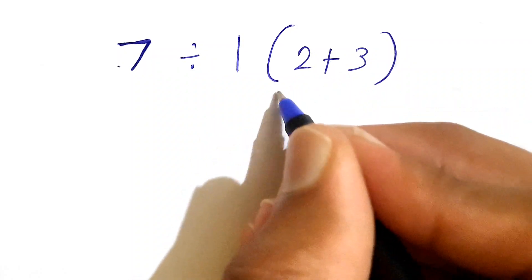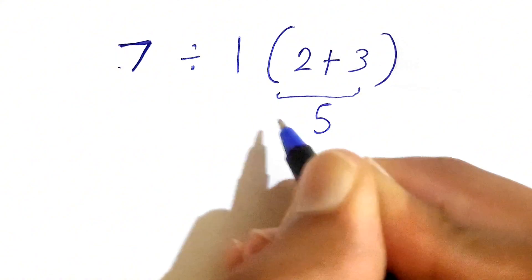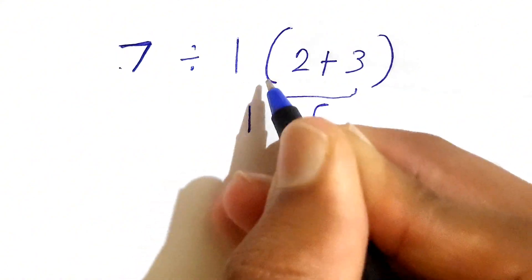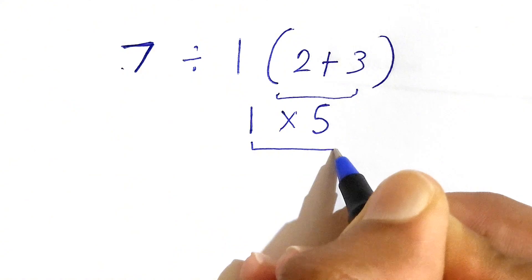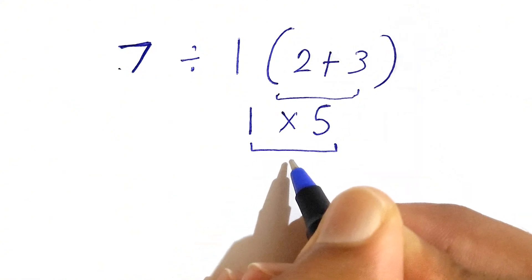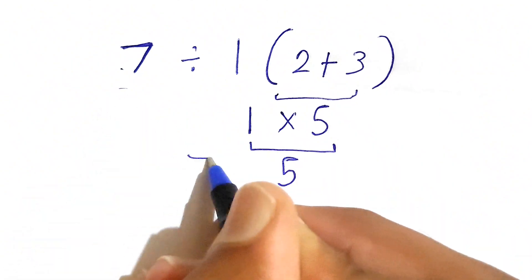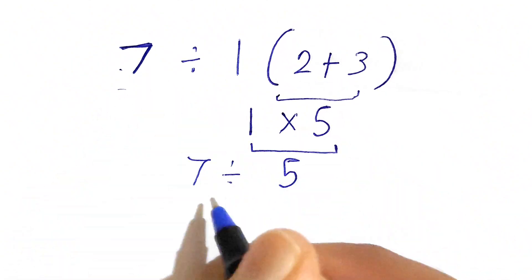2 plus 3 gives us 5, and 1 times 5 gives us the answer as 5. We have 7 divided by 5.